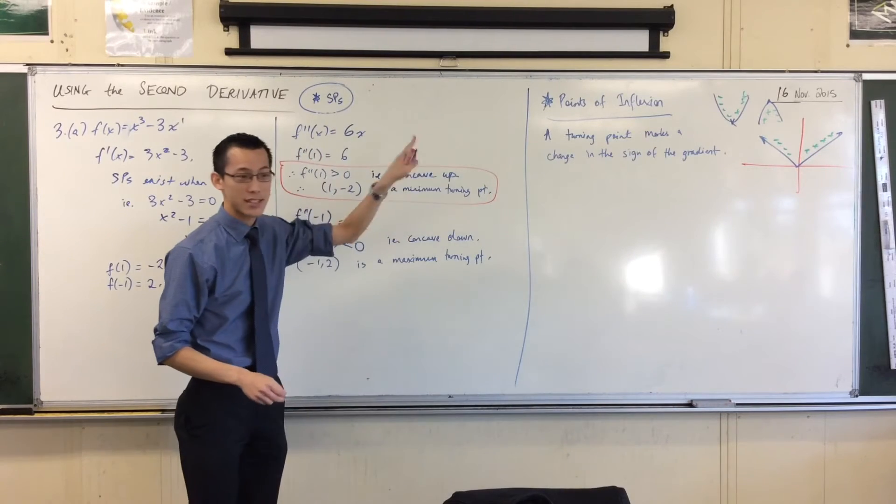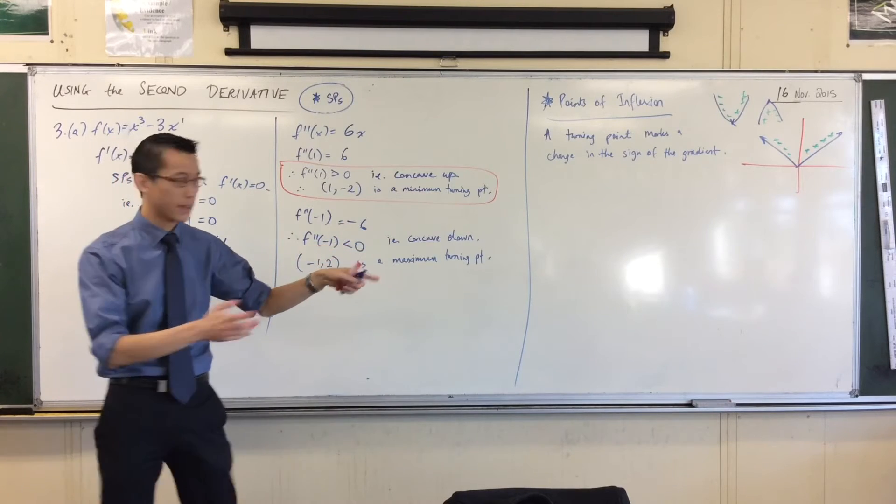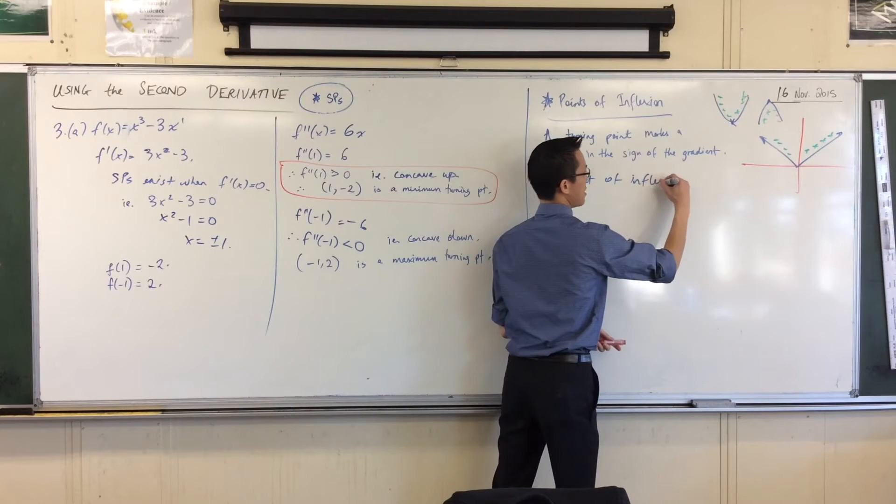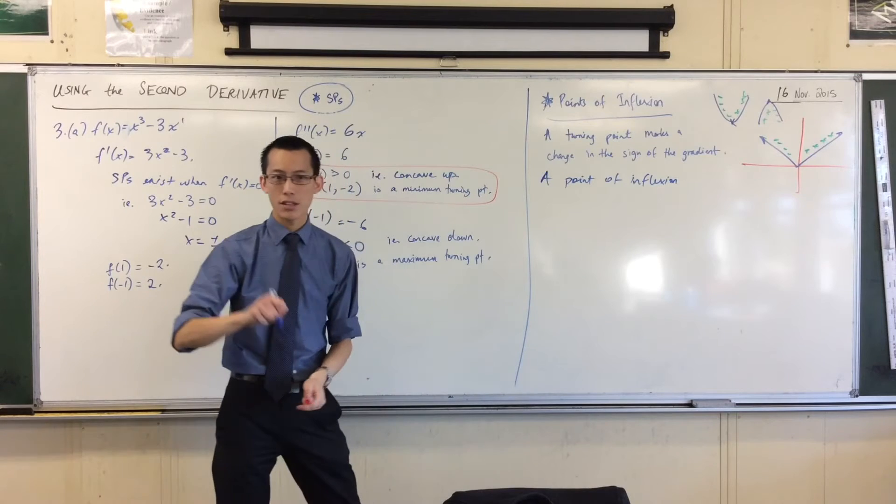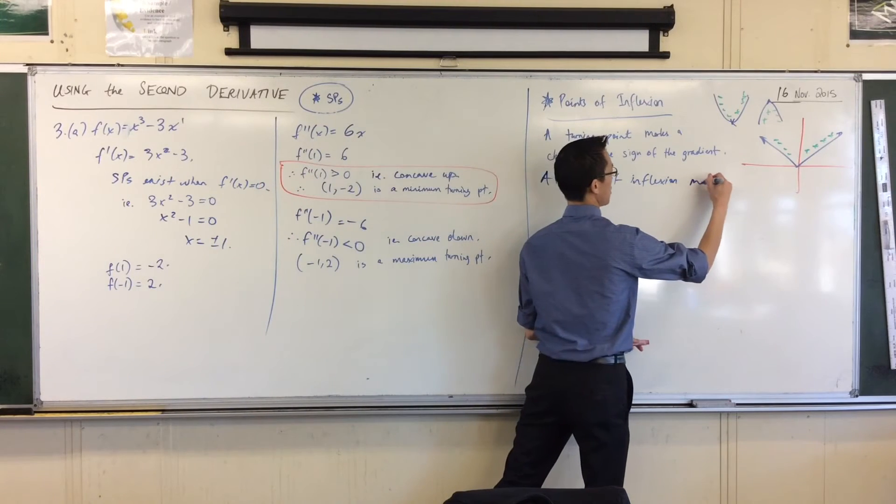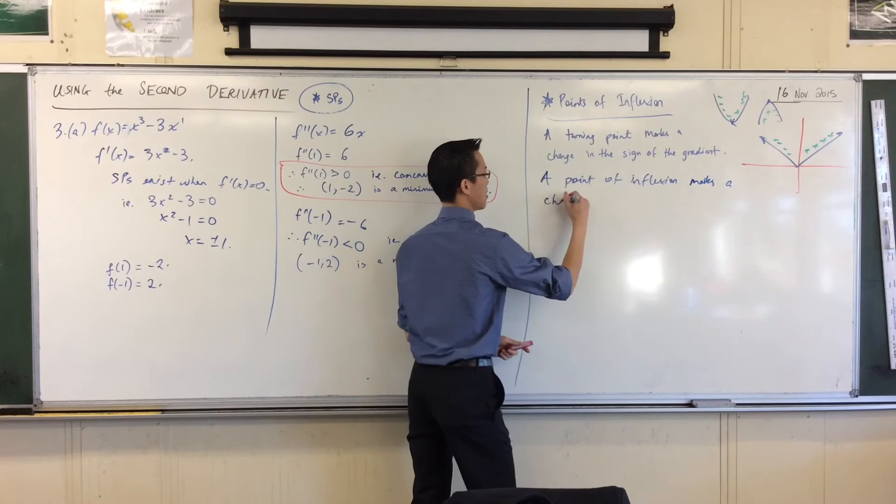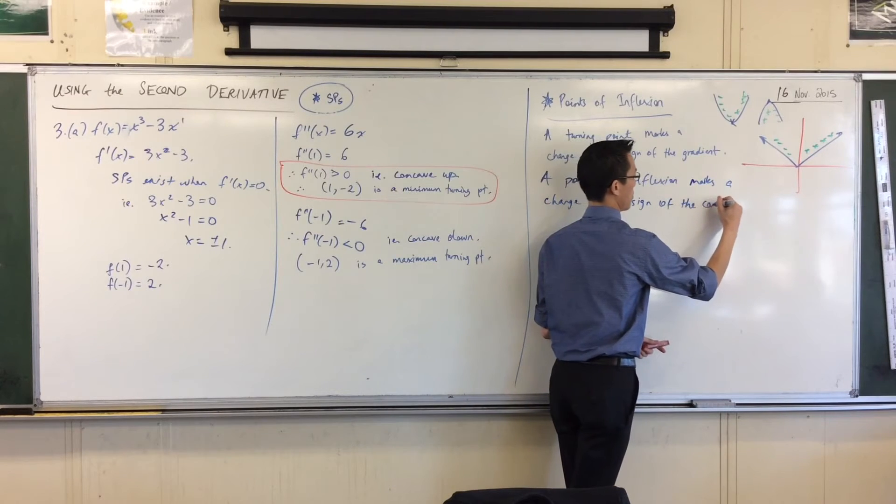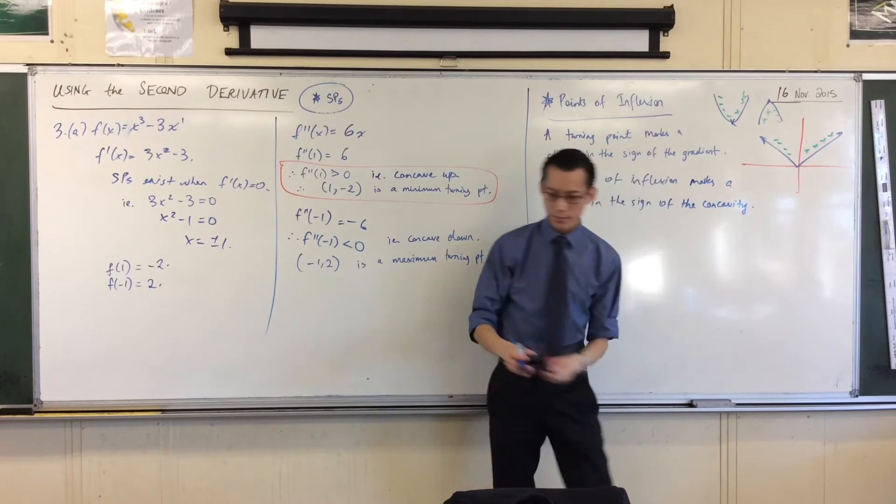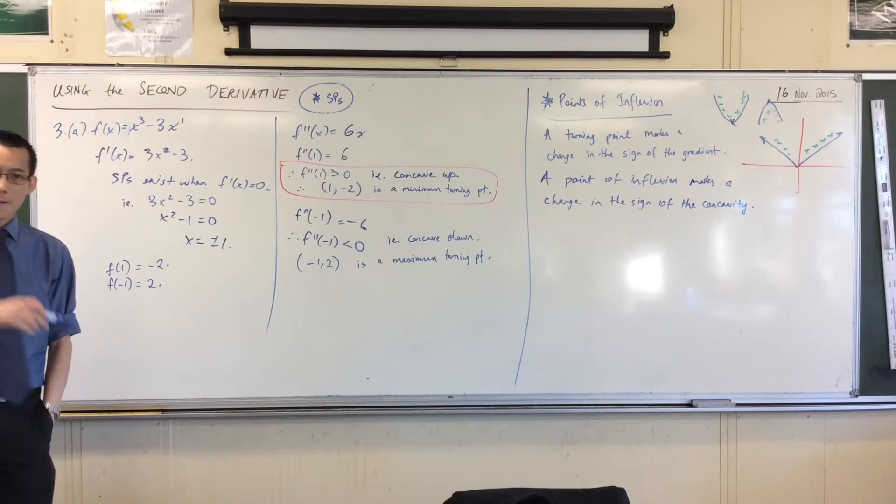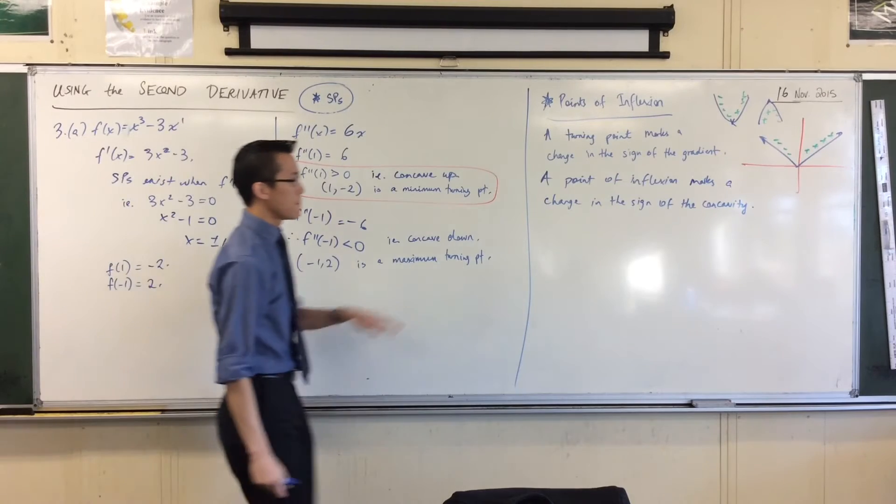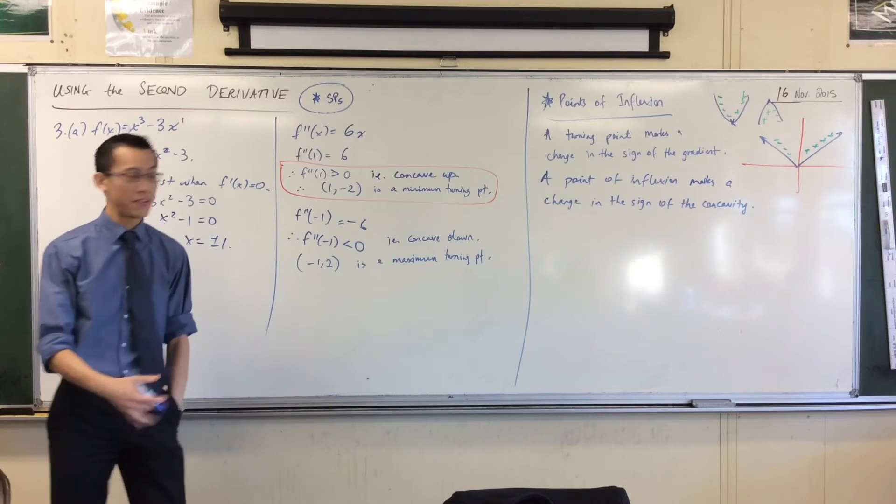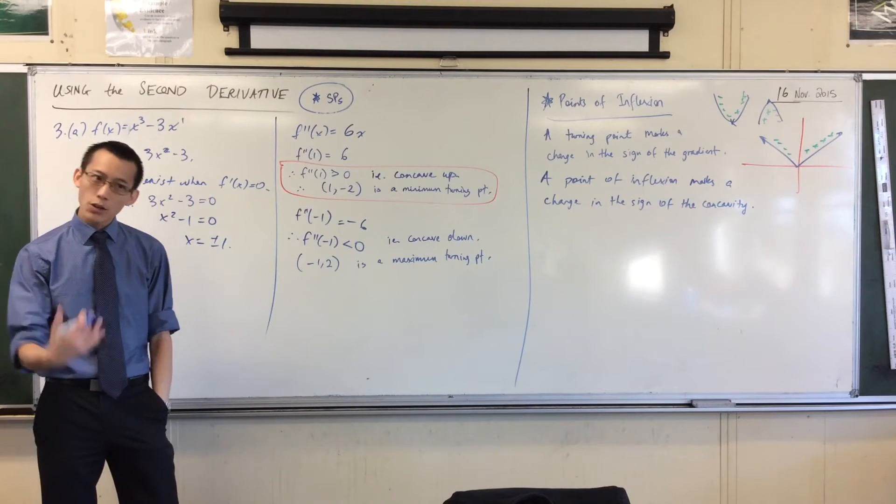Now points of inflection are just like this, but they're for concavity rather than gradient. So let's write this out. A point of inflection marks a change in the sign of the concavity. Now this is really helpful because now you see if I want to find what points of inflection are, and that's what the next question asks me, find the coordinates of any points of inflection.